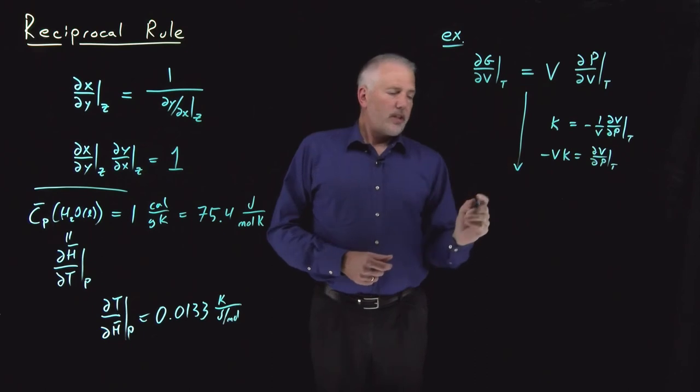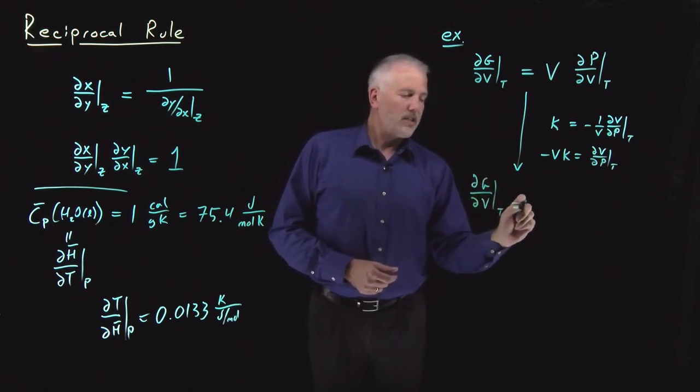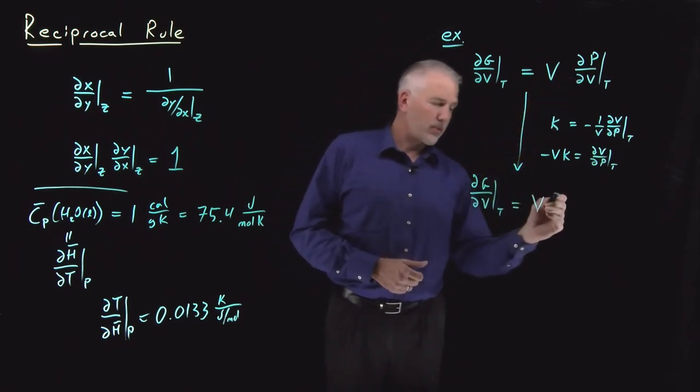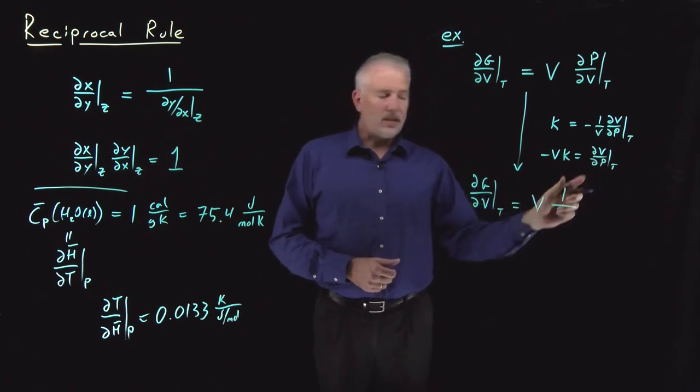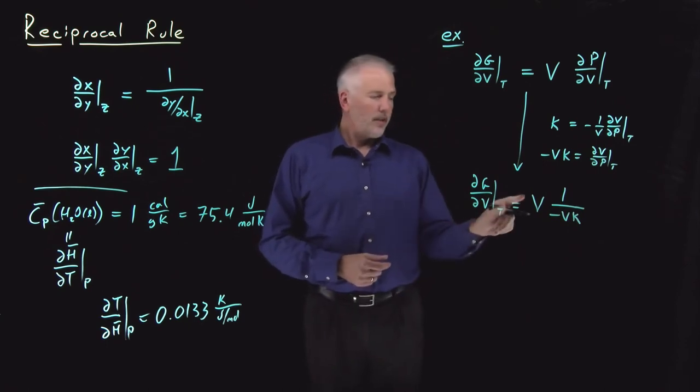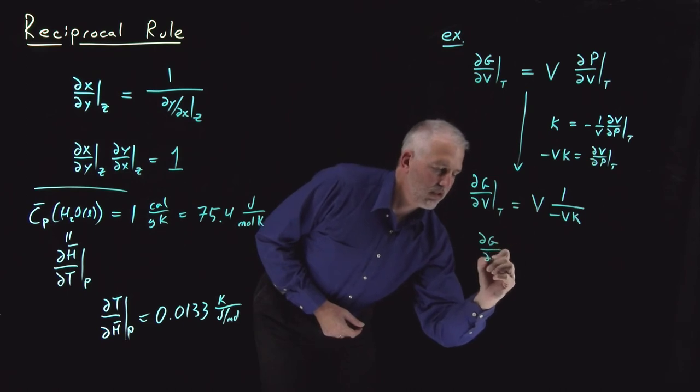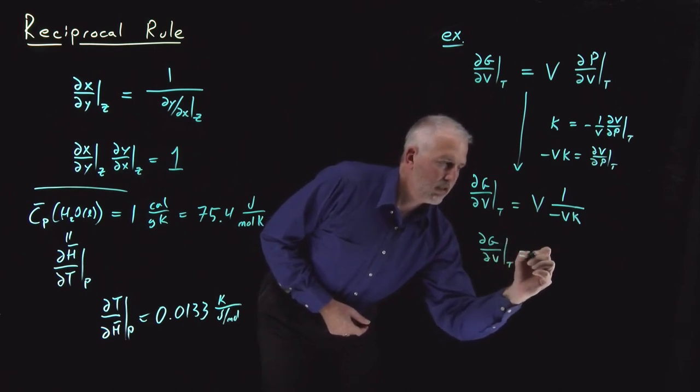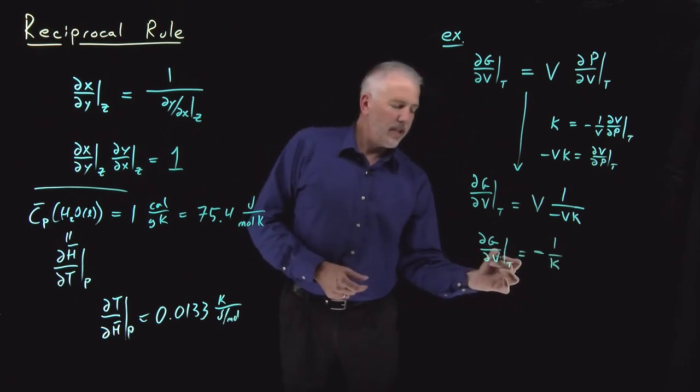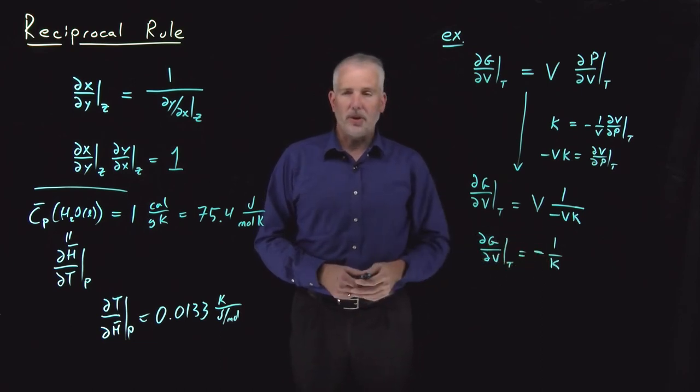I can now rewrite this expression and say dg dv at constant t is equal to volume times dp dv at constant t, but that's the reciprocal of dv dp at constant t, so the reciprocal of minus v times kappa. The v's now cancel, and I can say dg dv at constant t is equal to minus 1 over kappa, minus 1 over the isothermal compressibility.